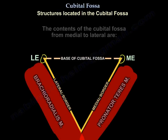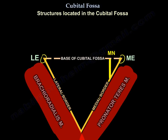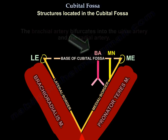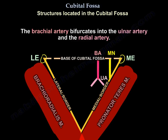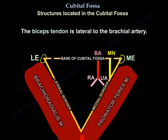The contents of the fossa from medial to lateral are as follows. The median nerve is the most medial. The second structure is the brachial artery and its bifurcations — the ulnar artery and the radial artery. Another structure in the cubital fossa is the biceps tendon, which is lateral to the brachial artery.